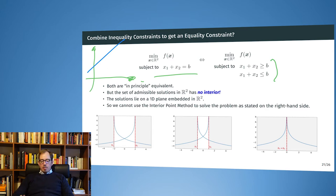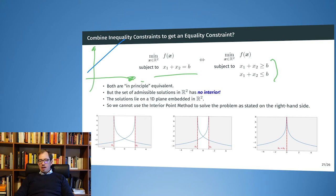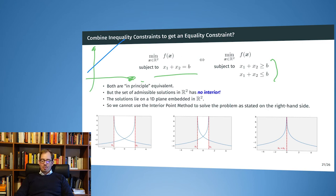The big problem is that if we take the interior of the intersection of the admissible sets, it will have no interior. And obviously for the interior point method, not having an interior is a problem.